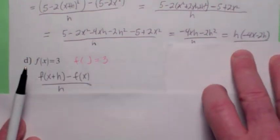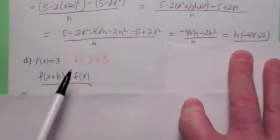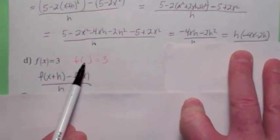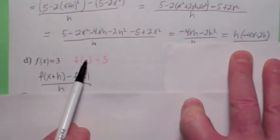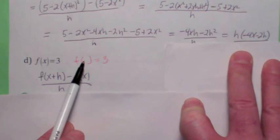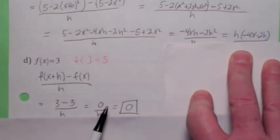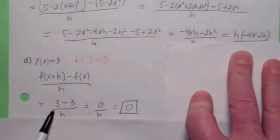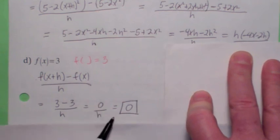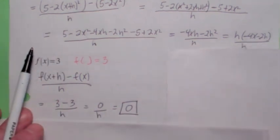So when you compute the difference quotient, again, f(0) equals 3, f(2) equals 3, f(13) equals 3, f(r) equals 3, f(x+h) also equals 3. So f(x+h) becomes 3, f(x) is 3, so you get 0 on the top. 0 divided by h is 0, so there you go. The difference quotient becomes 0 for that function.